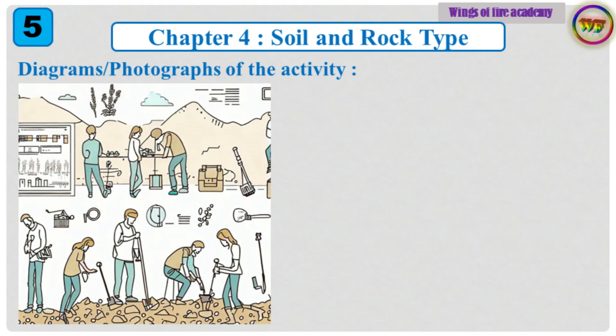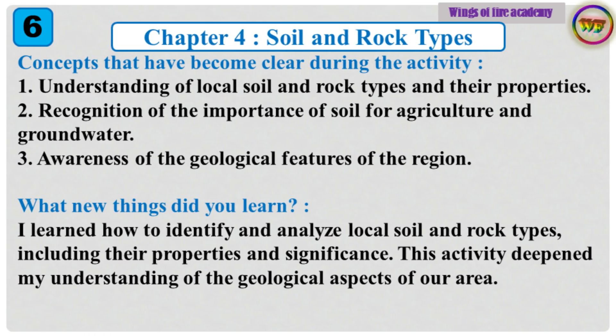Diagrams and photographs of the activity. Concepts that have become clear during the activity: 1. Understanding of local soil and rock types and their properties. 2. Recognition of the importance of soil for agriculture and groundwater. 3. Awareness of the geological features of the region. What new things did you learn? I learned how to identify and analyze local soil and rock types, including their properties and significance. This activity deepened my understanding of the geological aspects of our area.